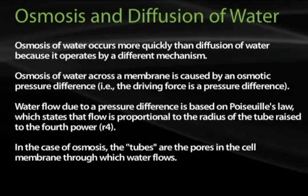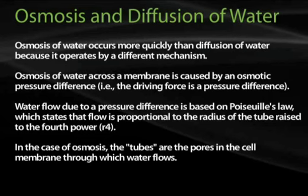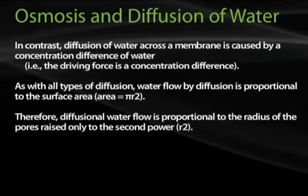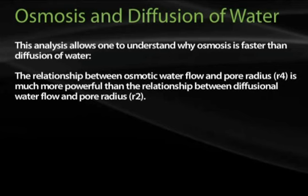Osmosis and diffusion of water: osmosis of water occurs more quickly than diffusion of water because it operates by a different mechanism. Osmosis across a membrane is caused by an osmotic pressure difference — the driving force is a pressure difference. Water flow due to a pressure difference is based on Poiseuille's law, which states that flow is proportional to the radius of the tube raised to the fourth power. In the case of osmosis, the tubes are the pores in the cell membrane through which the water flows. In contrast, diffusion of water across a membrane is caused by a concentration difference of water; the driving force is a concentration difference. As with all types of diffusion, water flow by diffusion is proportional to the surface area, where area equals pi r squared, so diffusion of water is proportional to the radius of the pores raised only to the second power, r squared.